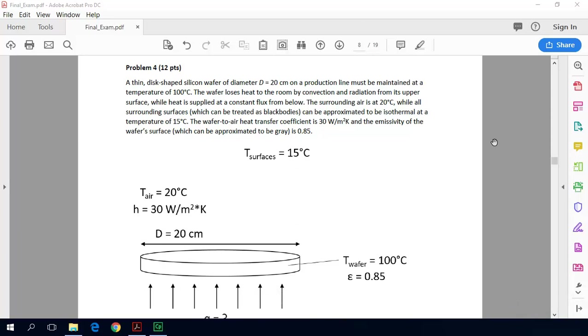The surrounding air is at 20 degrees C, while all surrounding surfaces, which can be treated as black bodies, can be approximated to be isothermal at a temperature of 15 degrees Celsius.